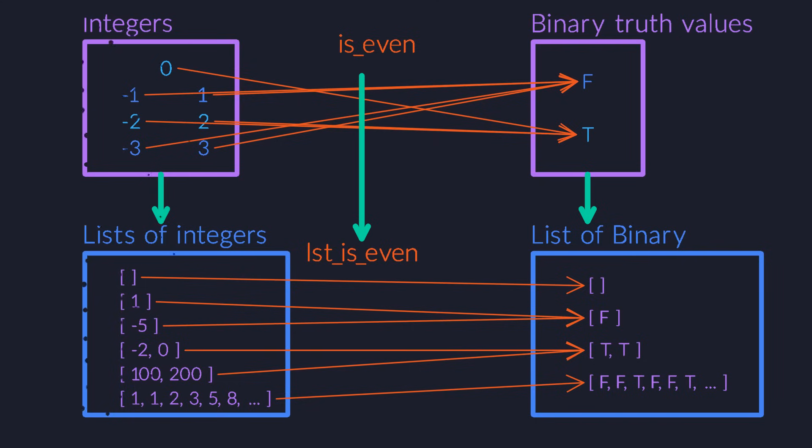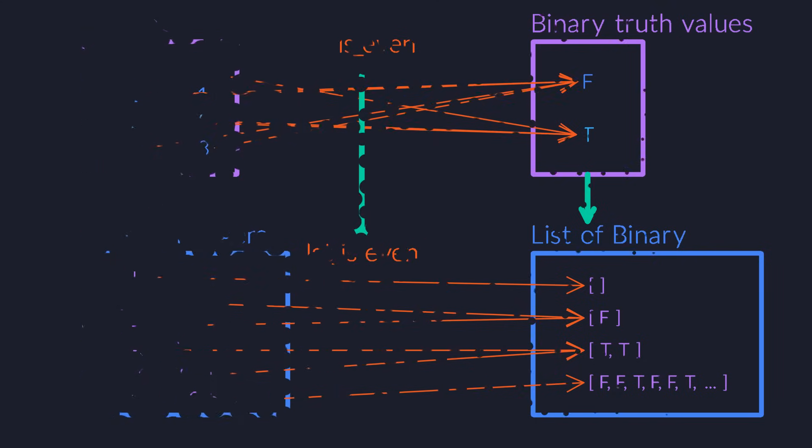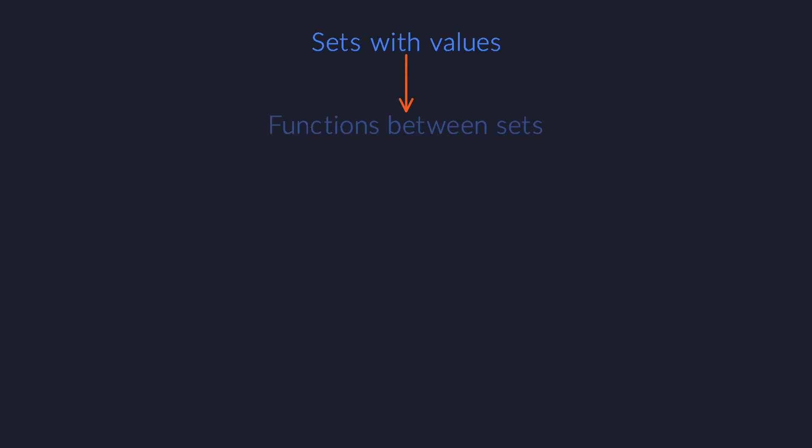One of the typical tricks in category theory is that you can always move yet another level up. We started from sets containing values. Step one was to ignore those values and focus on the arrows instead. Step two is functors, which map arrows to arrows. If you had to go another level up, what would be your approach?